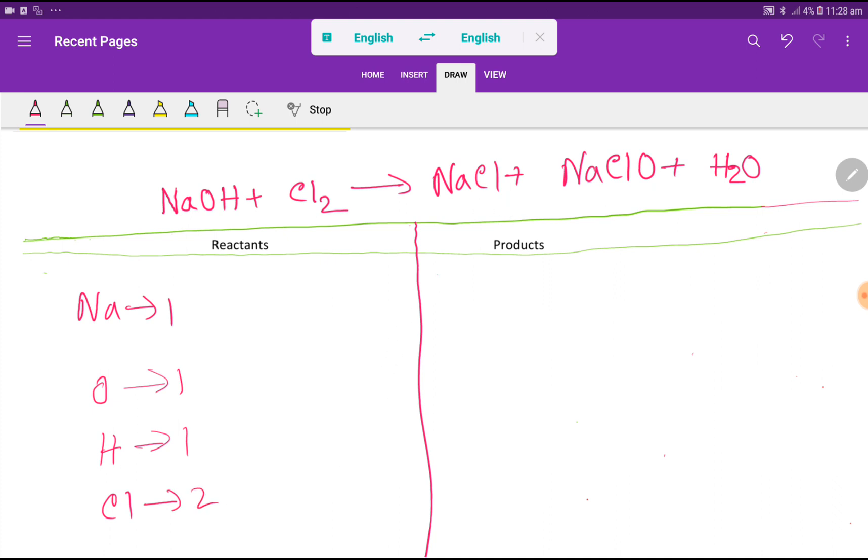Here we have sodium, that is one. Then here we have chlorine, one. Then here we have sodium, so let me add one more sodium, that gives me two. Then we have chlorine, so let me add that, which gives me two. Then we have oxygen, one. Then we have hydrogen, that is two. Then here we have one more oxygen, that is two.